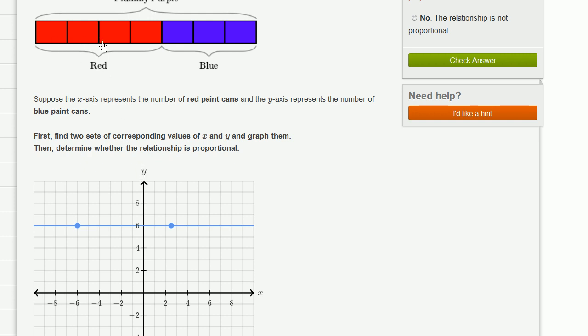We know if we have four parts red, we need three parts blue. So if we have four parts red, that's that axis, we're going to have three parts blue. And what if we had eight parts red?